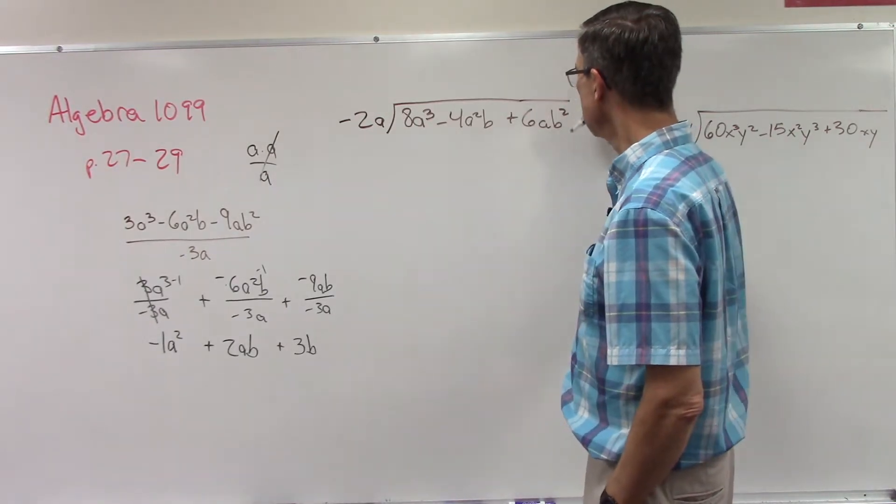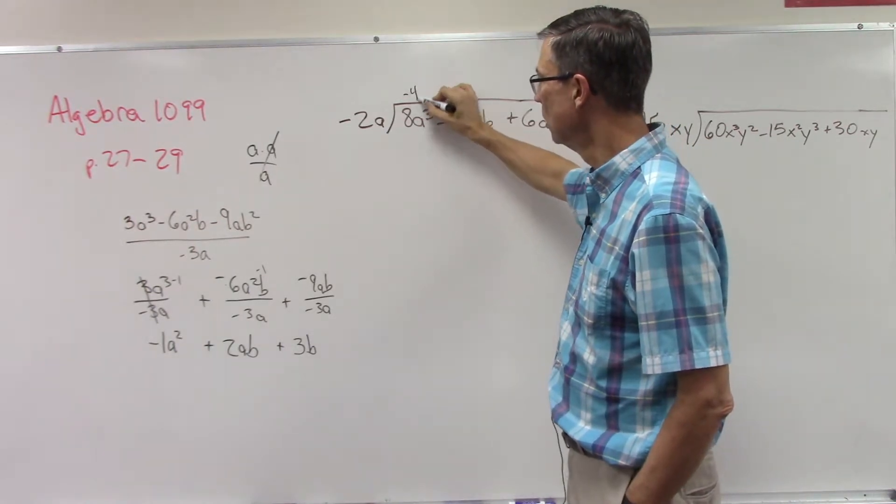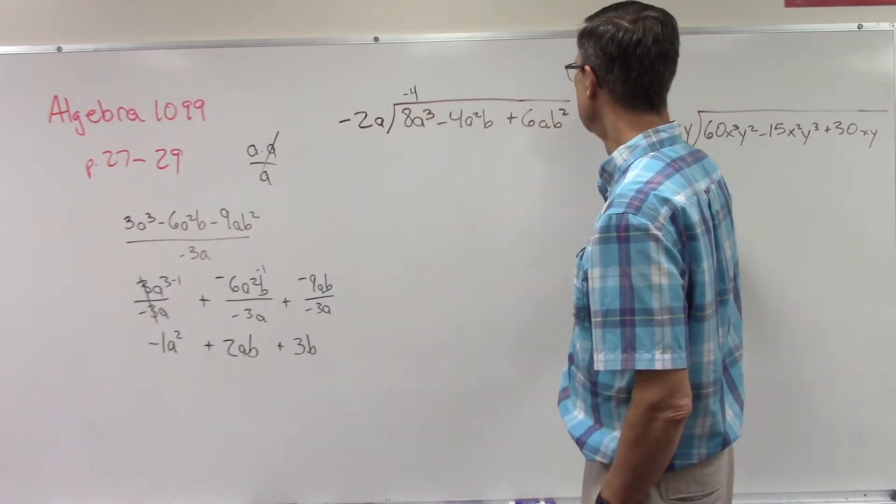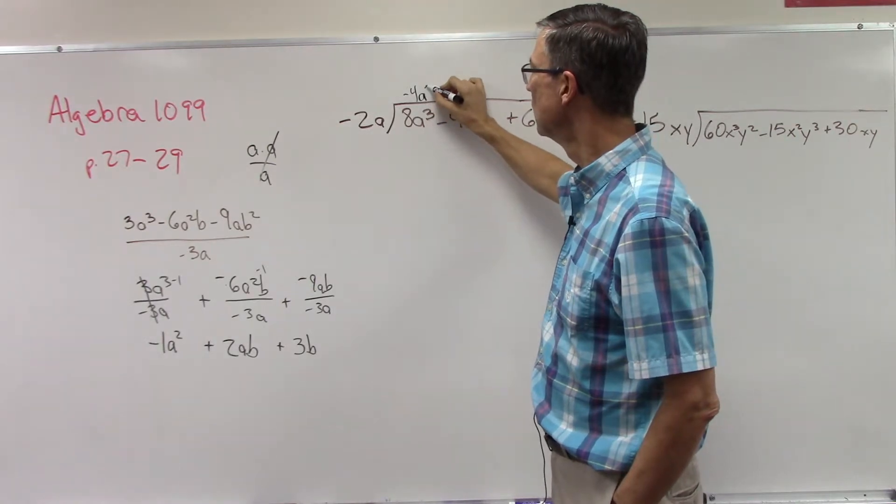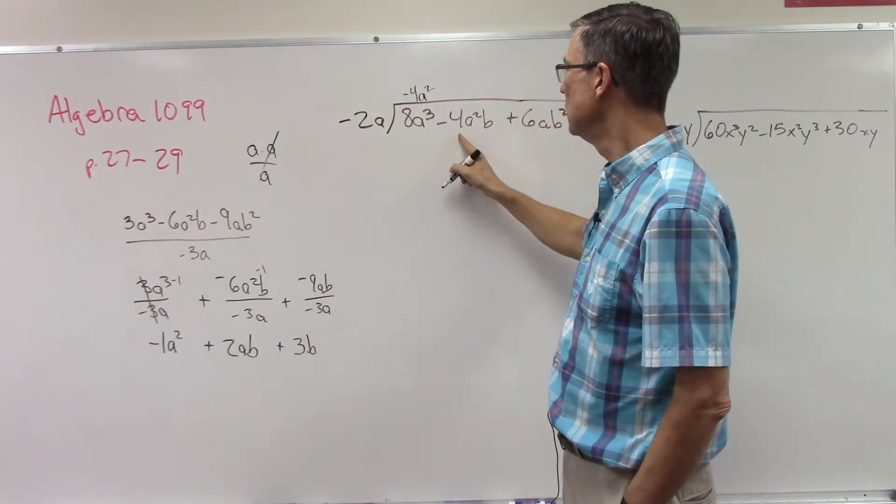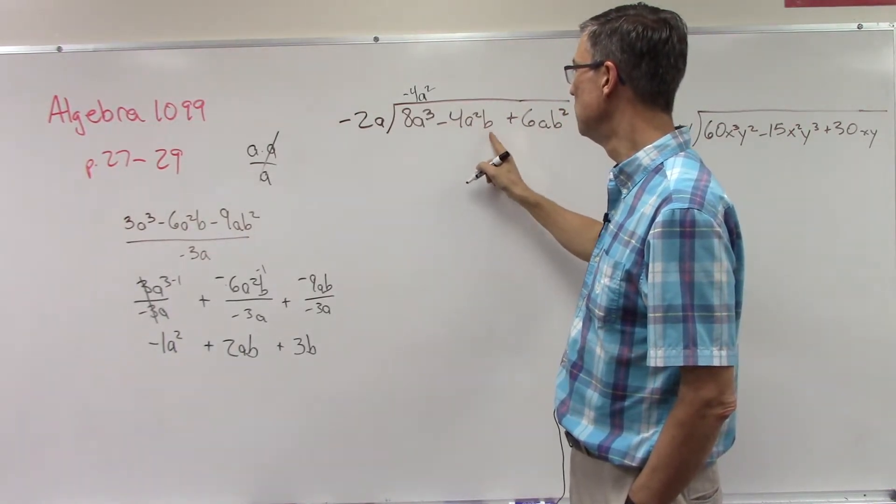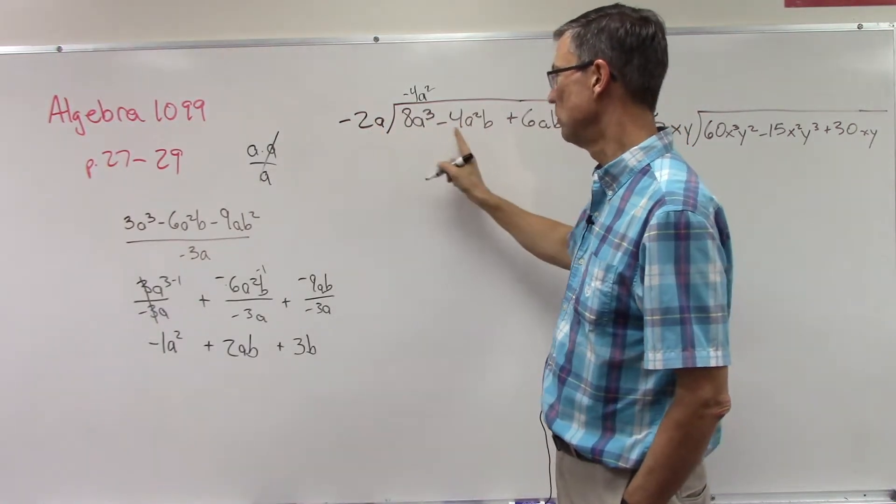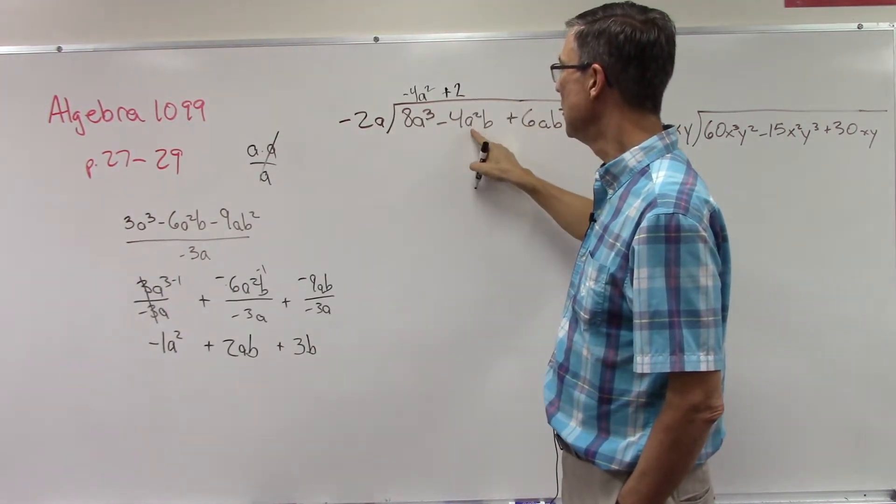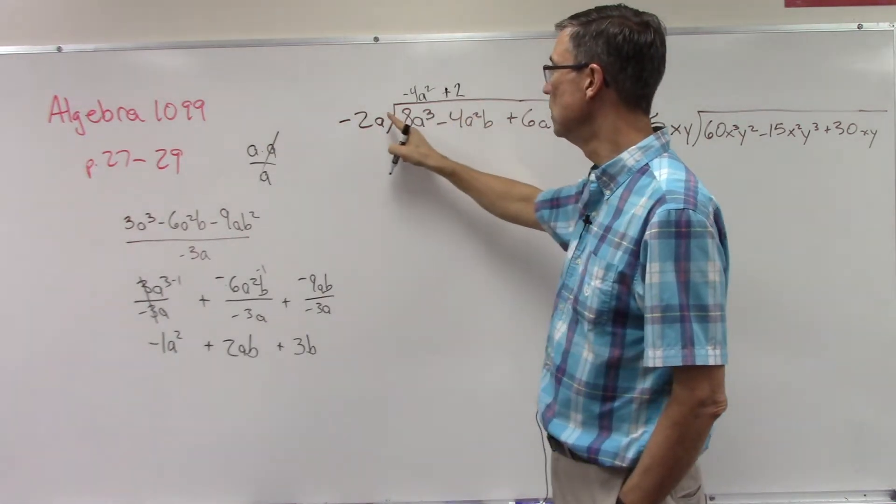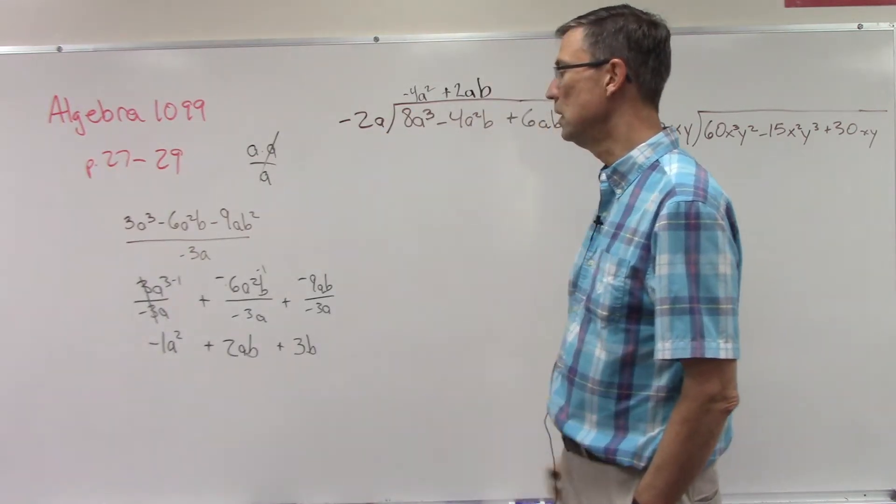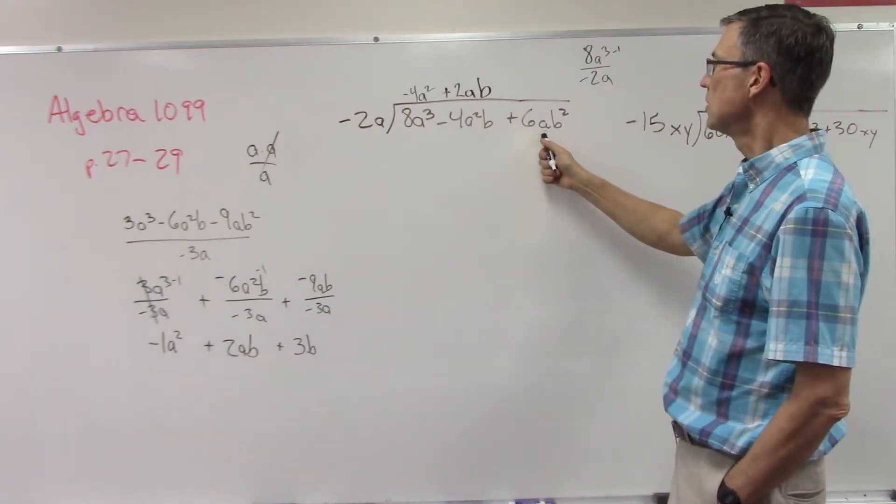If you picture it that way, what is 8 divided by negative 2? Negative 4, right. And then a to the third divided by a, so bring this up because minus 1, or one of these cancels if you want to think of it that way, so it'd be a squared. Now we can take negative 2a and divide it into the negative 4a squared B. So 4 divided by 2, which is a negative 4 divided by negative 2, are you with me? 2a squared divided by a, we're going to subtract the exponents, 2 minus 1, a. There is no B out here, so we just leave the B as part of the answer.